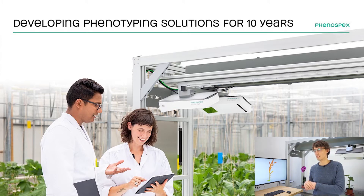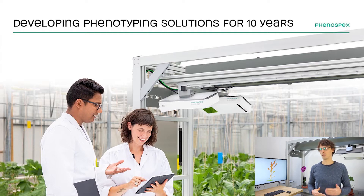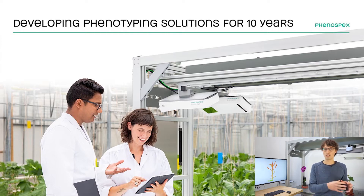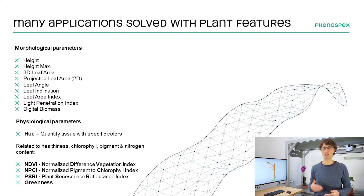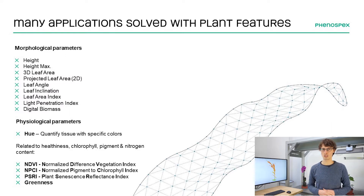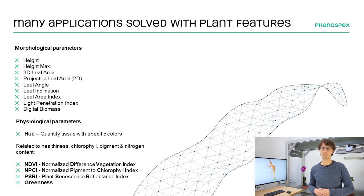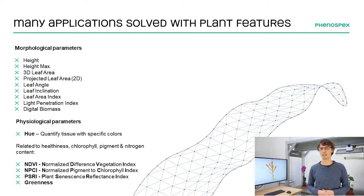That's why in a second phase we started to develop an algorithm that could convert this 3D file into plant parameters — like the height, the leaf area, angle — and later we also added spectral indices after we updated and improved our sensors to capture light and infrared reflectance.